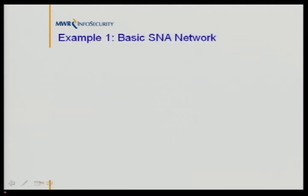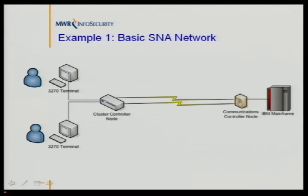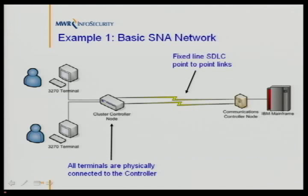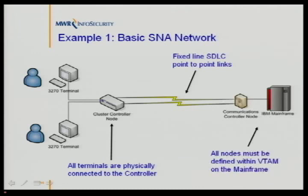Let's look at some basic architectures employing SNA. A basic SNA network from the 1980s: the mainframe is on the right, user terminals on the left. Terminals were plugged into a cluster controller node, usually via coax. The cluster controller was then connected to a communications controller node — the front-end processor — via a point-to-point link, usually using the SDLC protocol at the link layer. All nodes had to be defined within VTAM before they would work.